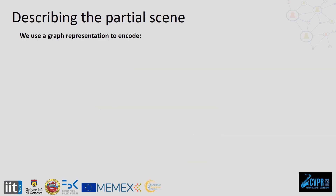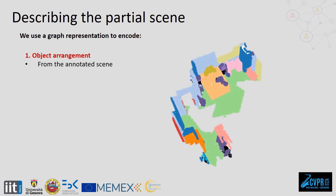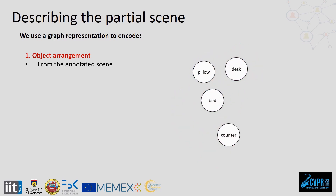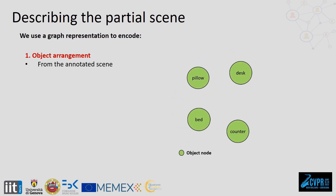To describe the scene, we use a graph-based representation that encodes two types of information. The first is the object arrangement. Starting from the semantic annotated point cloud of the partial scene, we first identify the objects in the room and encode these as object nodes in our graph. We describe how these objects are positioned with respect to one another using proximity edges, which define the distance between a couple of objects — this can be small, for the case of bed and pillow, and larger in the case of bed and counter. Since each object is at a certain distance from another, all the object nodes are fully connected.